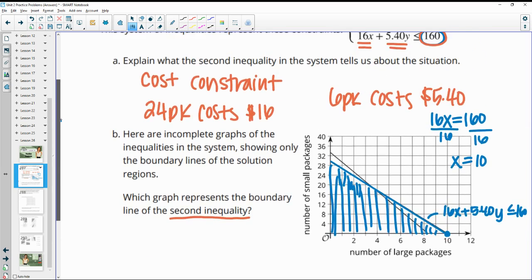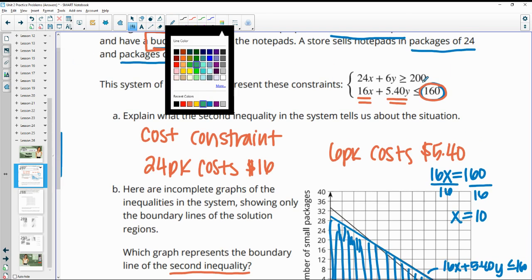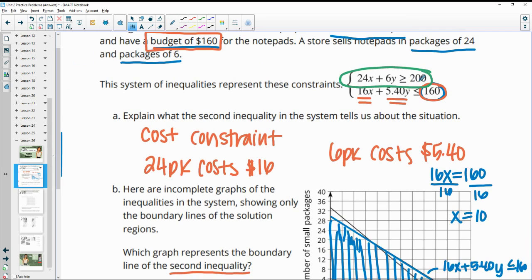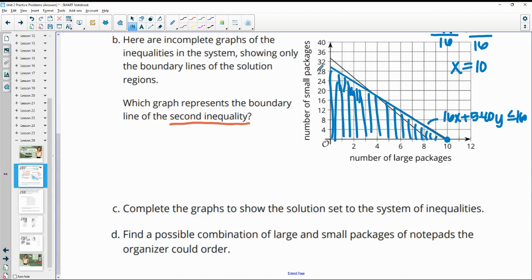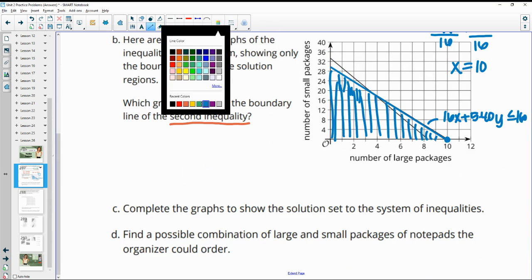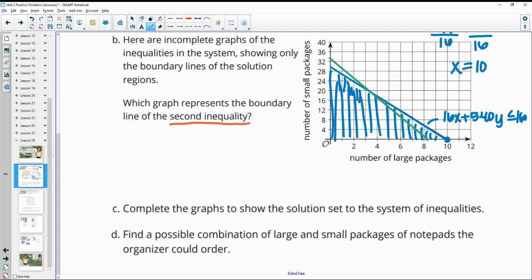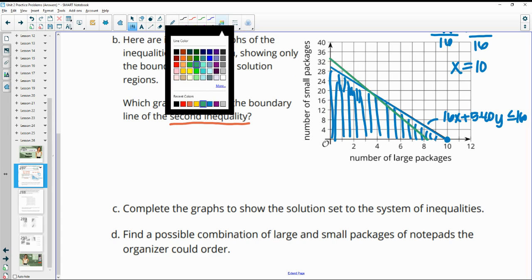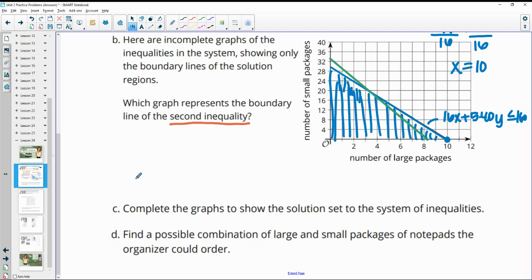Then the other inequality told us that we needed to be greater than or equal to 200 packs. So when we go, we need more notepads than this line. So if we looked at, and let me get this line graphed here in green. So here's our other equation. And we need to be higher than that. So if we plugged in 0, 0 into that inequality, we would have 0 plus 0 needs to be greater than or equal to 200. Because we'd have 24X plus 6Y needed to be greater than or equal to 200. And 0 is definitely not greater than or equal to 200. So this 0, 0 is not in the solution set. So we actually need to be above this green line.